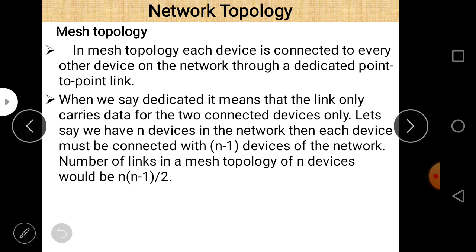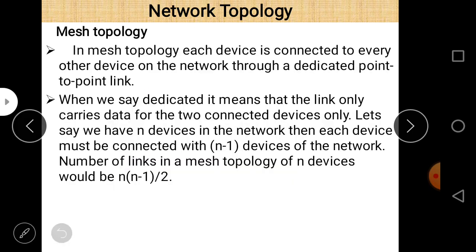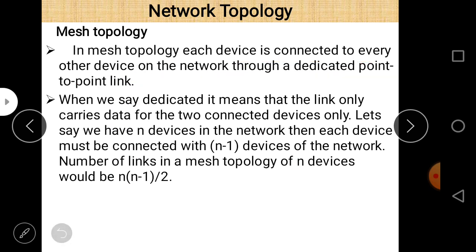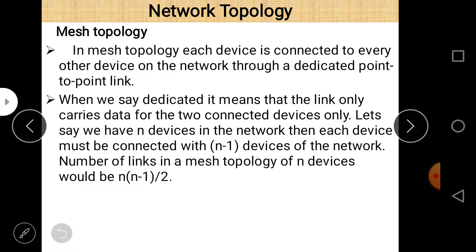Next is mesh topology. In mesh topology, each device is connected to every other device on the network through a dedicated point-to-point link. Dedicated means the link only carries data for those two connected devices only. If there are n devices in the network, each device must be connected to n minus 1 devices, and the total number of links is n(n−1)/2.